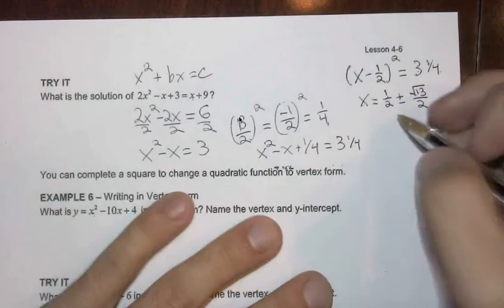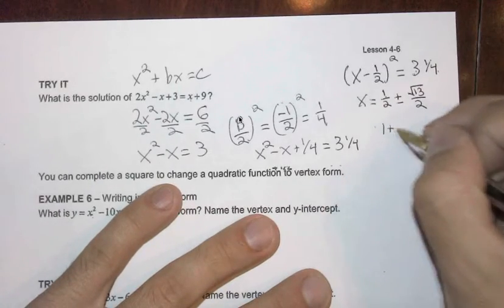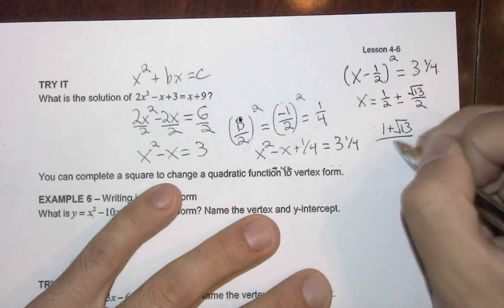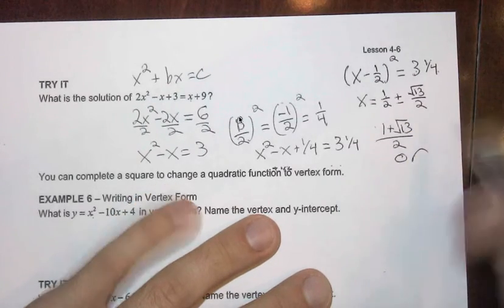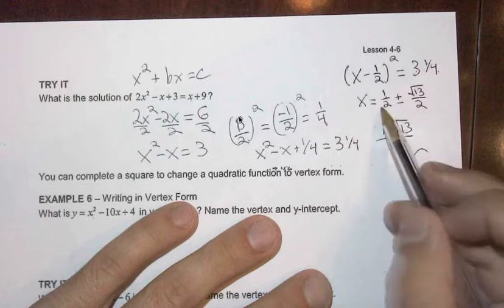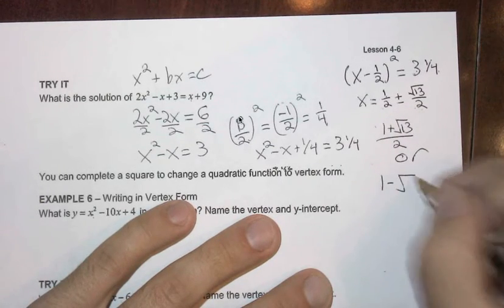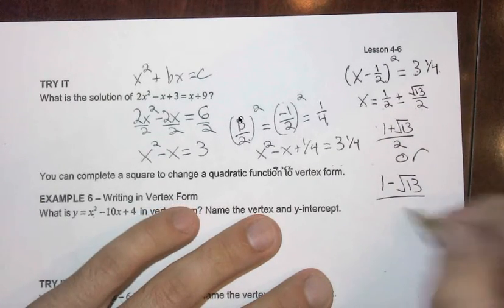So our answer here could be 1 plus root 13 all over 2. Or, again, I'm combining because these are the same denominator, we could have 1 minus root 13 over 2.